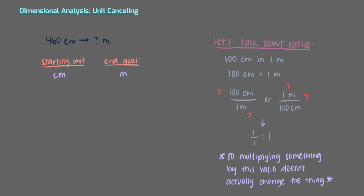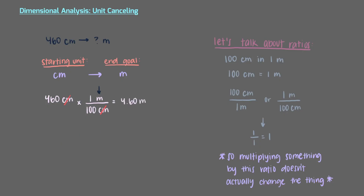So now we need to figure out which ratio to use. We know that our starting point is in centimeters and we want to get to meters. This means that we'll use the 1 meter over 100 centimeters ratio. This allows us to cancel out the centimeter units and leaves us with meters, which is the unit our answer should be in. That's because units are just like a variable in math — x divided by x is 1. So now we can multiply everything out to get that 460 centimeters is equal to 4.60 meters. Because the ratio we multiplied by is equal to 1, the length didn't change. We only changed the units we expressed the length in.